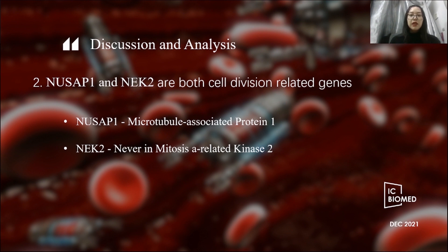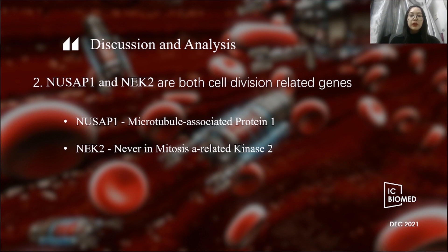Then, why do these genes play similar roles? NASAP1 is a microtubule-associated protein that binds to microtubules and stabilizes them, maintaining the function of spindle microtubules around the chromosomes during mitosis. NASAP2 is a serine protein involved in the control of centrosomal segregation and spindle formation in mitotic cells. The high expression of these two genes indicates that cells are undergoing abnormal mitosis, which is likely indicative of cancer development and prognosis.